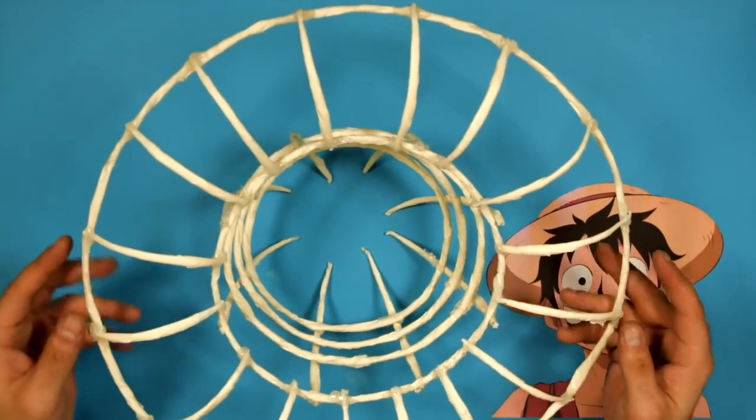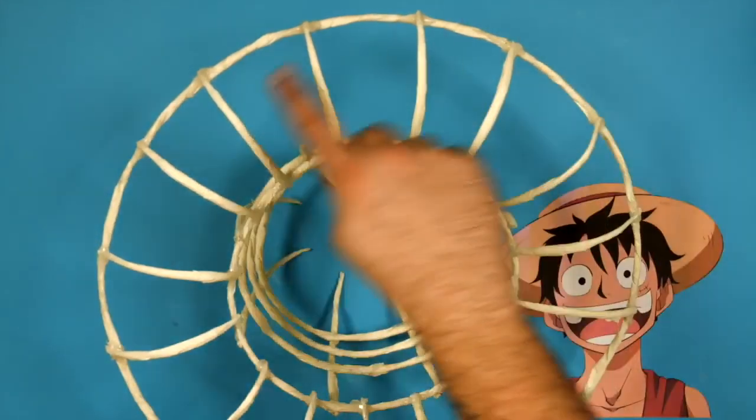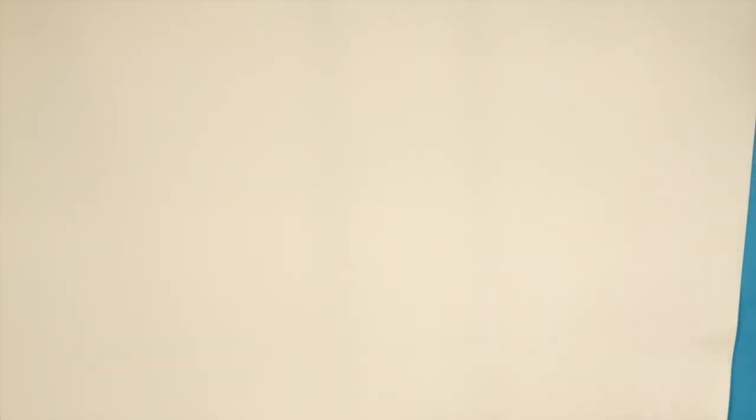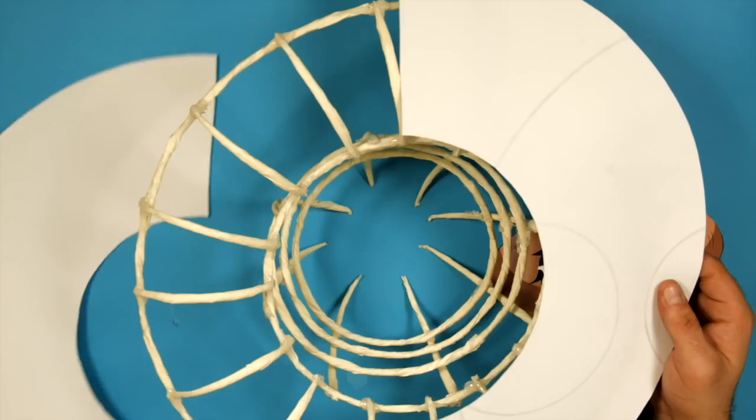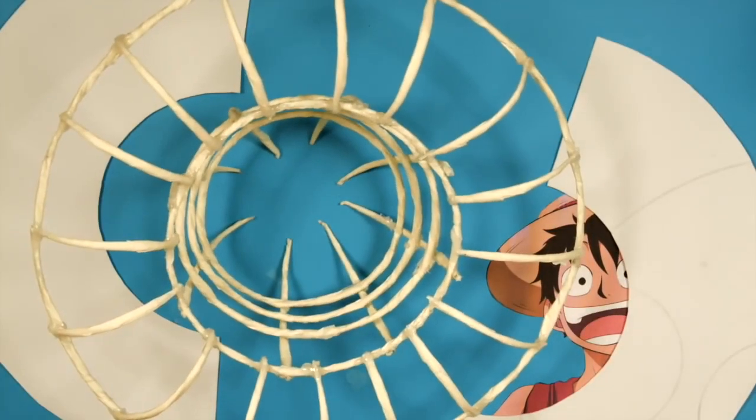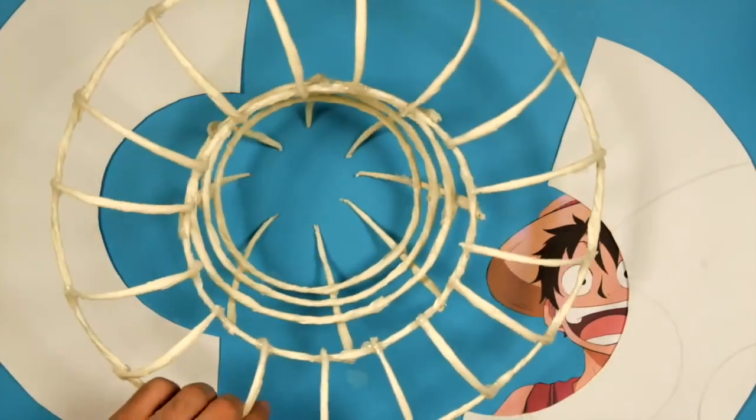Next, we are going to cover the outer structure. For this, we are going to use some sheets of EVA rubber. In them, you must draw three equal pieces with these dimensions. Cut them and stick them to the structure with more silicone. Put glue on both circles and spokes. Place the EVA rubber little by little, always matching each piece with the base.